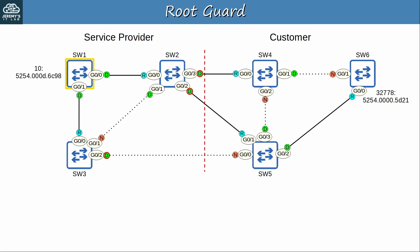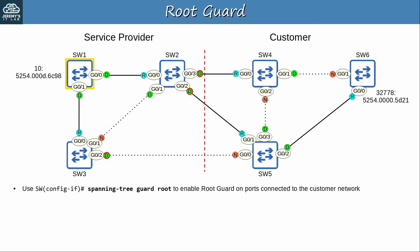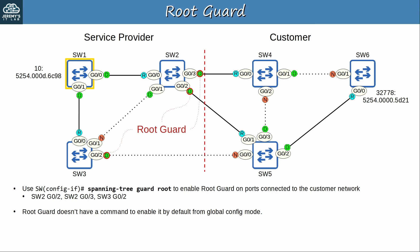Use 'spanning-tree guard root' in interface config mode to enable RootGuard on ports connected to the customer network — SW2 G0/2 and G0/3, and SW3 G0/2 in this case. Note that RootGuard doesn't have a command to enable it by default from global config mode. That's because RootGuard should only be enabled on specific interfaces. If you enabled it on all interfaces, all interfaces would reject BPDUs and STP wouldn't function.